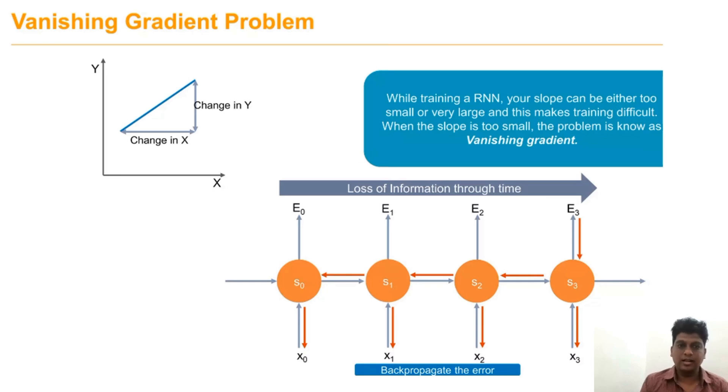The main issue with RNN is the vanishing gradient problem. What is the vanishing gradient problem? While training this type of network, if the slope is too small or too large, that makes the training process very difficult. When the slope is very small, we call it the vanishing gradient problem.